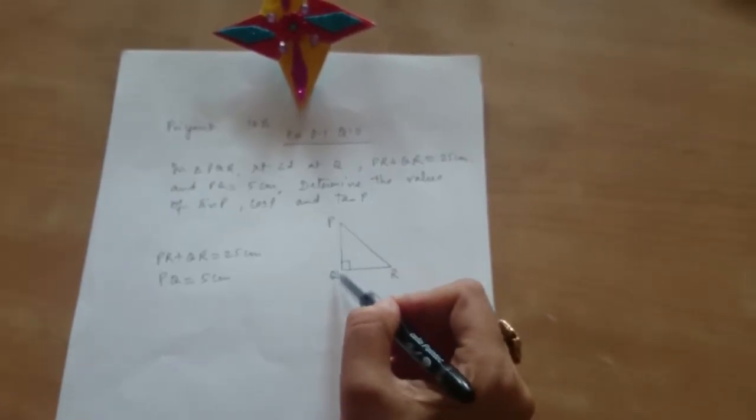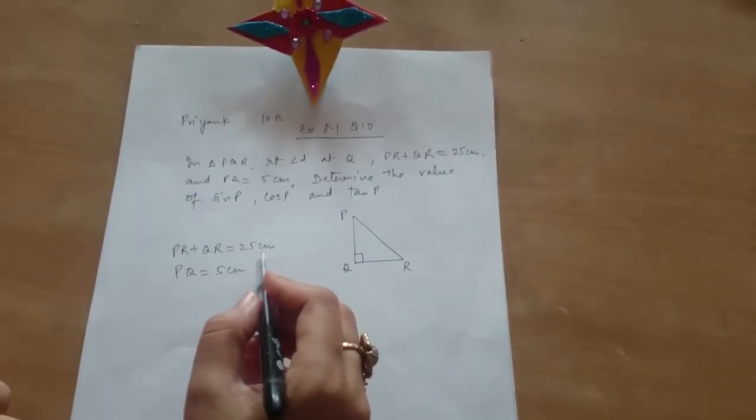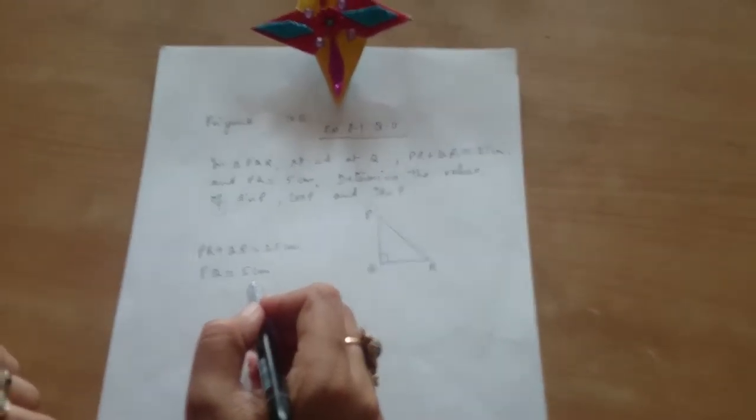Ok, this is right triangle PQR, right angle at Q. PR plus QR is 25 cm and PQ is 5 cm.